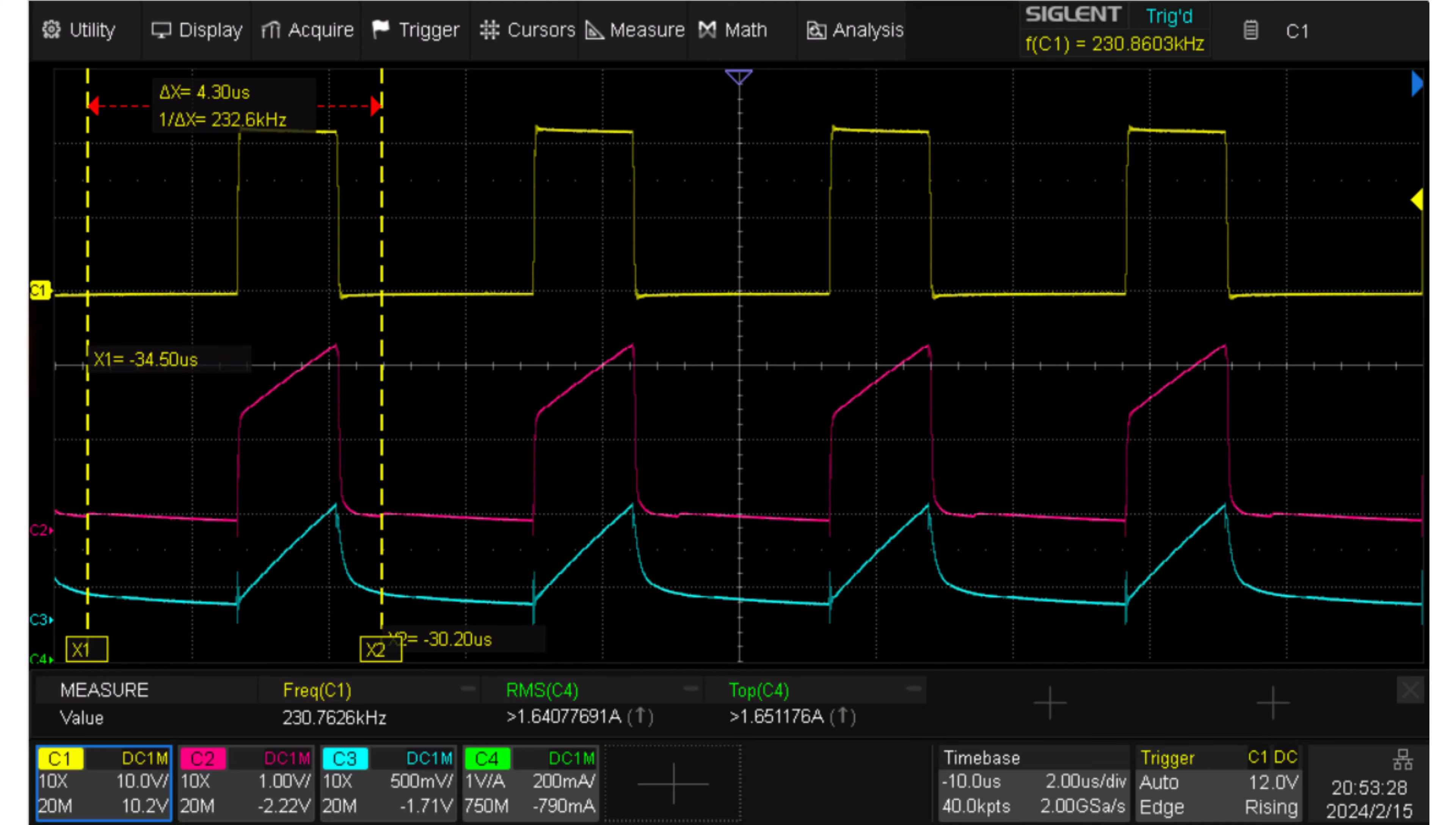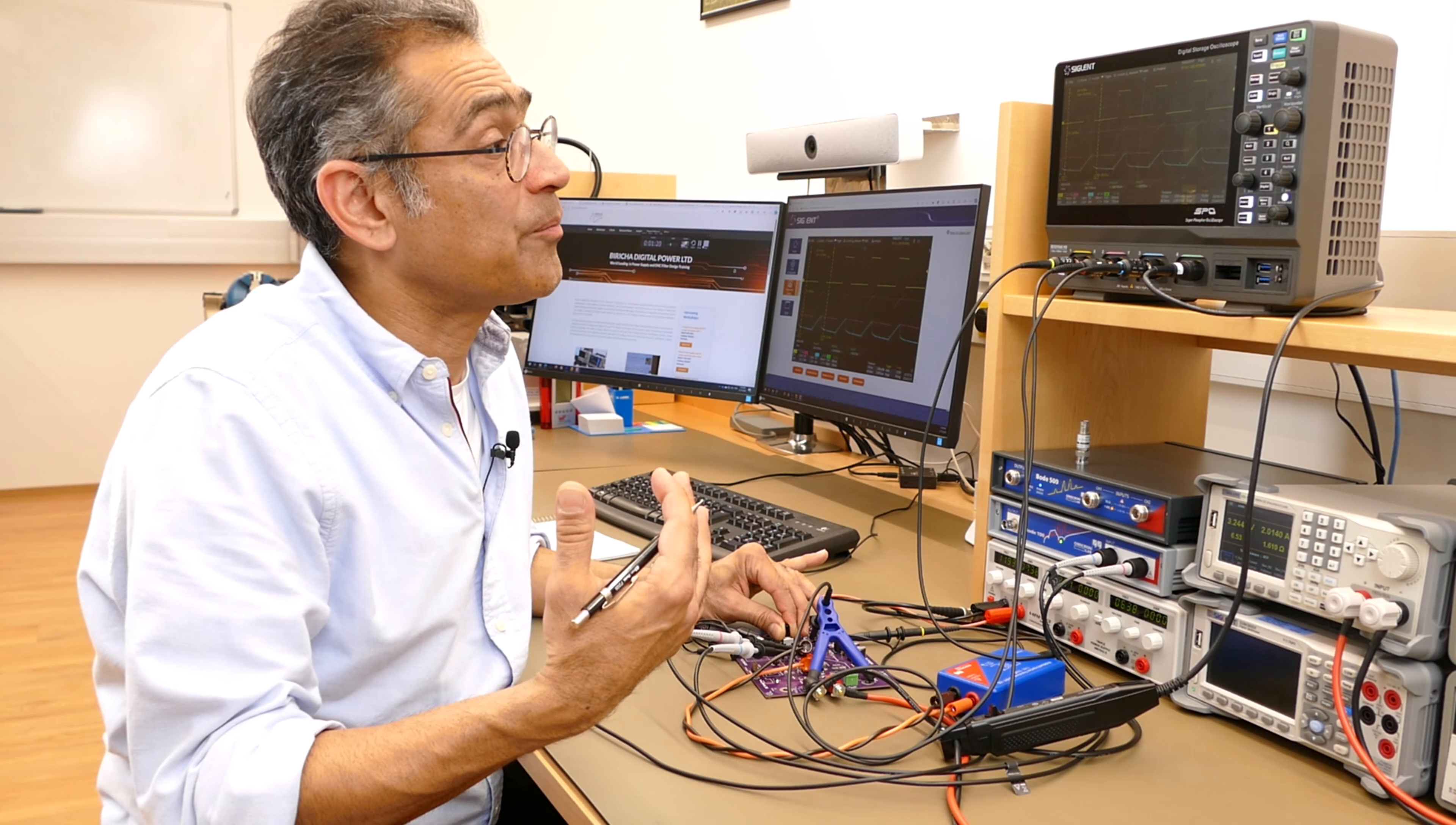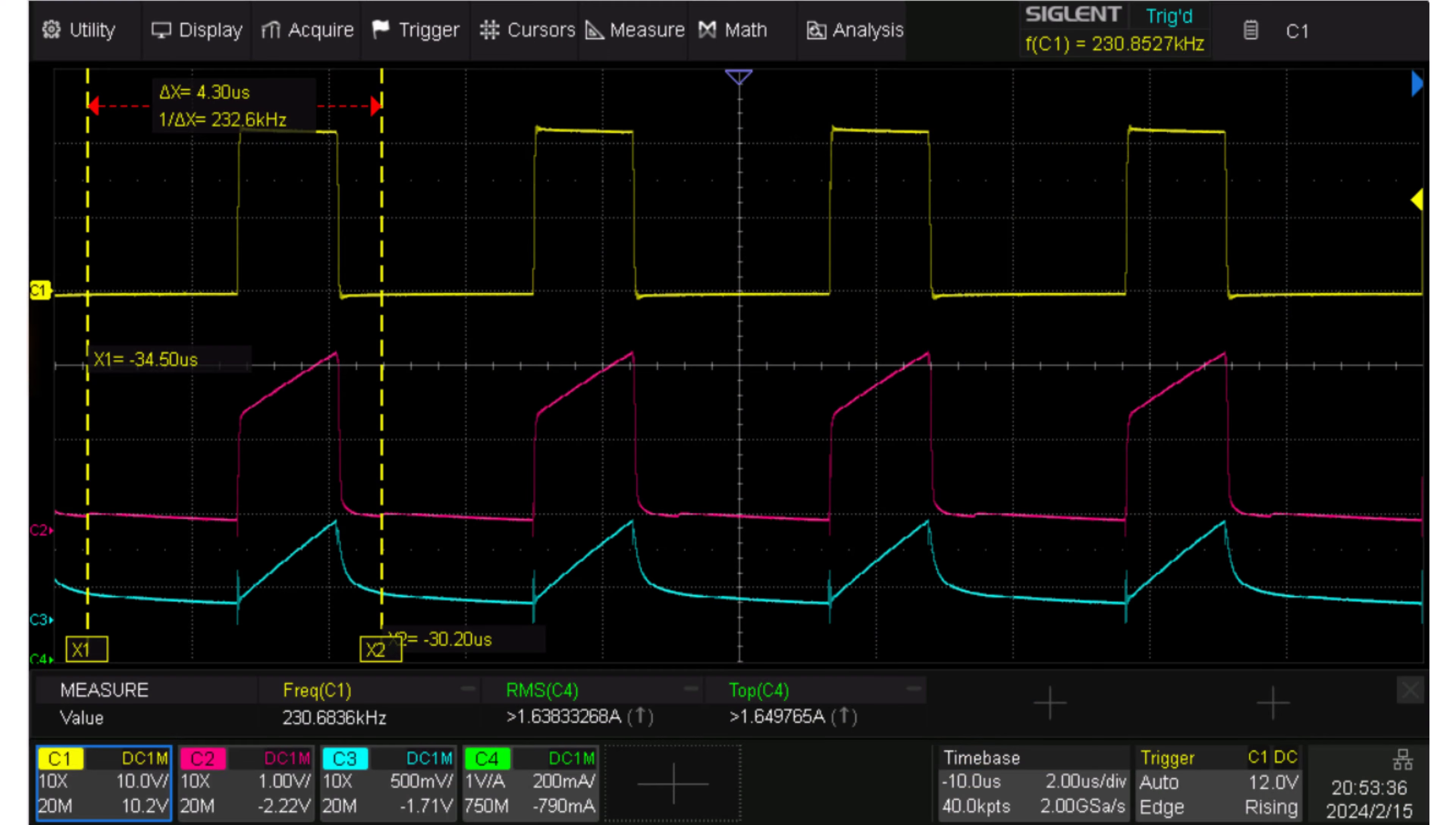Now, if I reduce it too much, it is going to go into subharmonic oscillations. And let's see if we can make that happen. So I'm going to reduce my ramp, you see that the size of the blue ramp is going down. And at some point, we're going to start seeing.